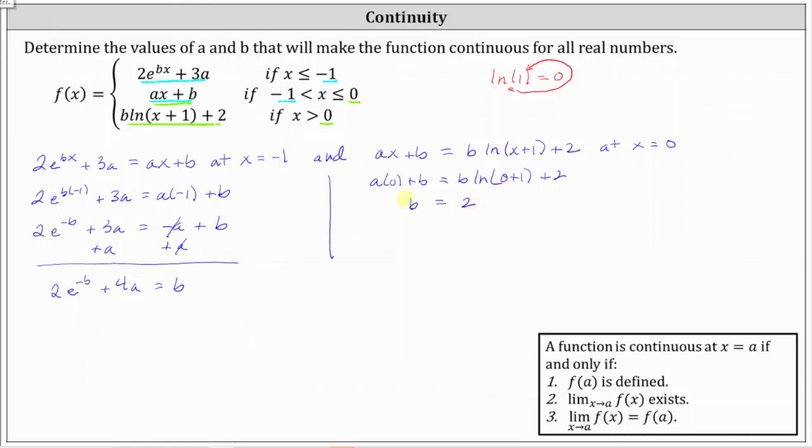Well, now that we know b is equal to two, we can go back and find a from the first equation. The next step is to substitute two for b, which gives us two times e to the power of negative two plus four a equals two. Let's isolate four a by subtracting two e to the power of negative two on both sides, which gives us four a equals two minus two e to the power of negative two. Divide both sides by four. Simplifying, we have a equals one half minus one half times e to the power of negative two.